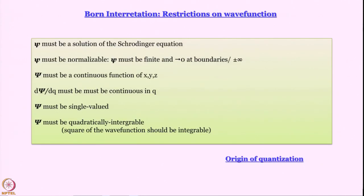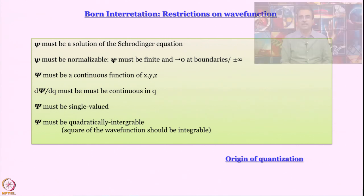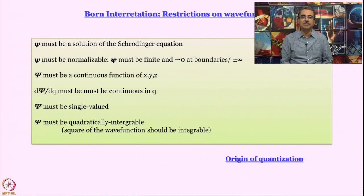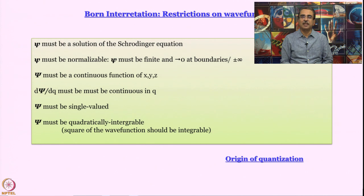Before we do, let us remind ourselves that so far we have discussed the Schrödinger equation. We have said that the Schrödinger equation yields wave functions, and these wave functions are interpreted by Max Born to be associated with what we call probability waves. So mod psi squared is equal to the probability density — that is what we have said.